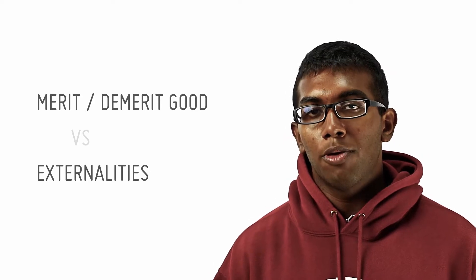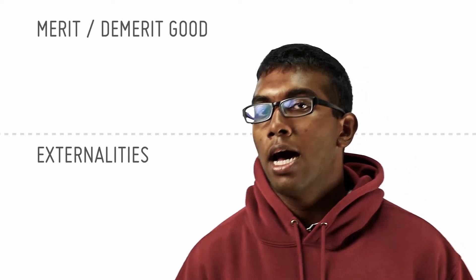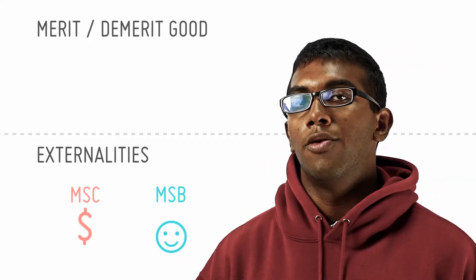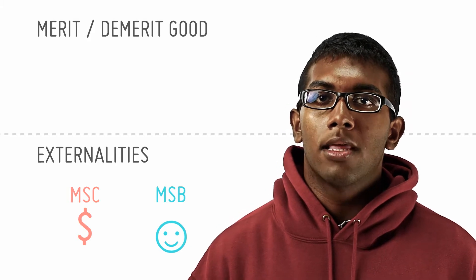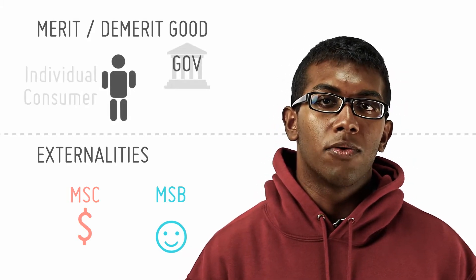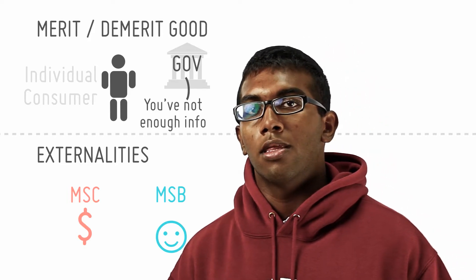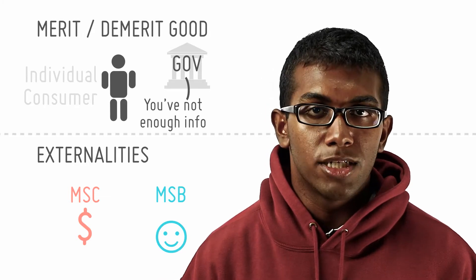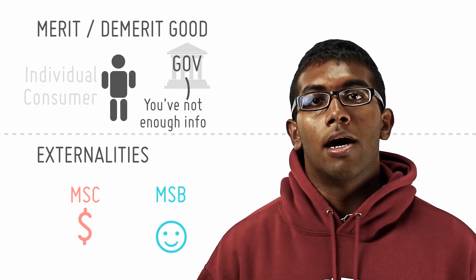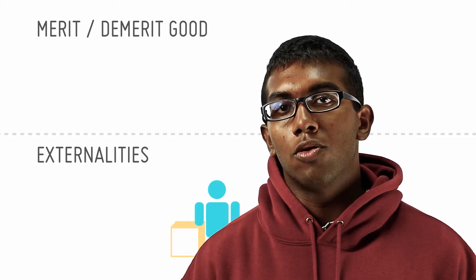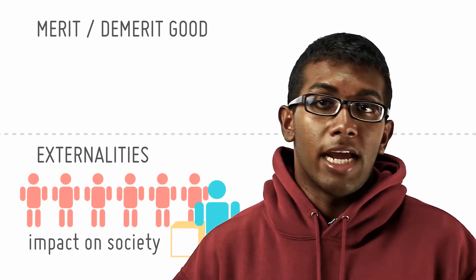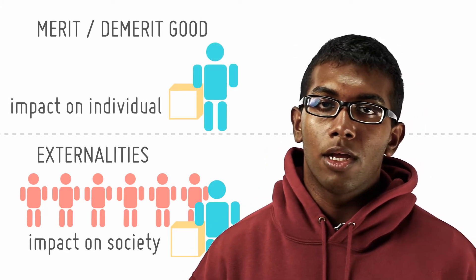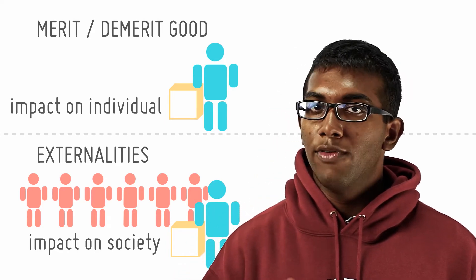Basically, what we're going to do is set the difference. Under negative externality, you're looking at both the marginal social cost as well as the marginal social benefit — both sides of the market. Whereas under demerit and merit goods, you're basically looking at the consumer himself — whether the government deems the consumer is exposed to enough information or not enough information. And secondly, in externality, you're looking at the impact of goods on society in general, or on third parties, whereas under demerit and merit goods, you're looking at the effect of a good on the individual alone.